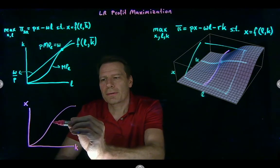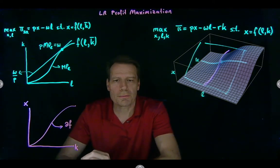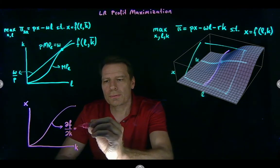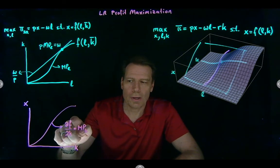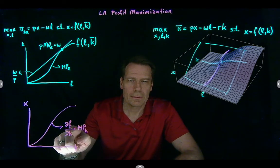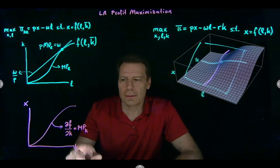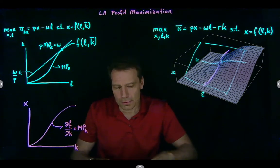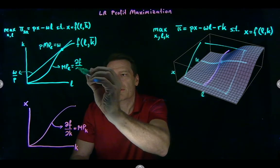Now the slope of that slice is the partial derivative of f with respect to k, which is just equal to the marginal product of capital — it tells us how much output goes up as we vary capital. That's just the definition of marginal product of an input: how much additional output do we get from one more unit. Just as the marginal product of labor was the partial derivative of the production function with respect to labor.